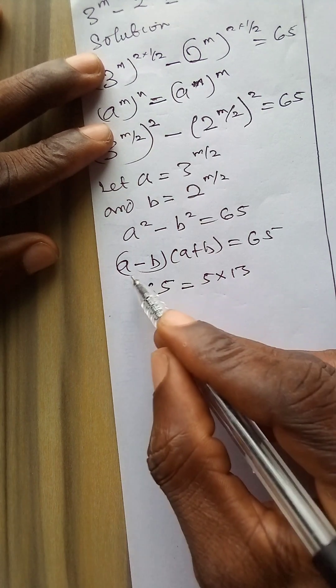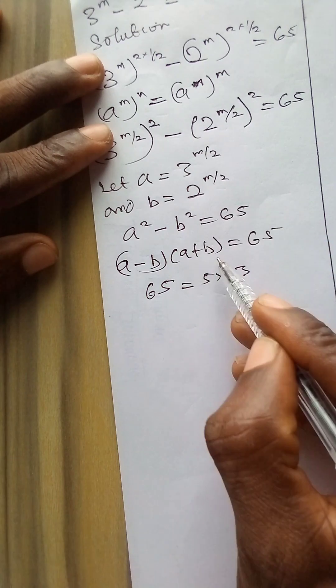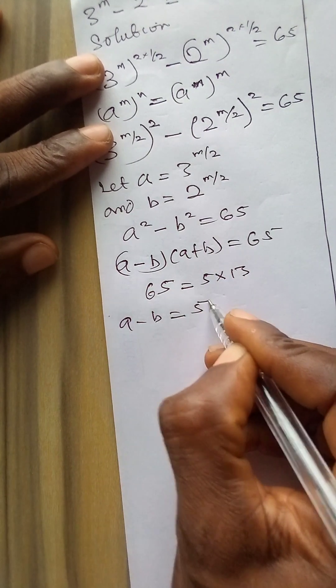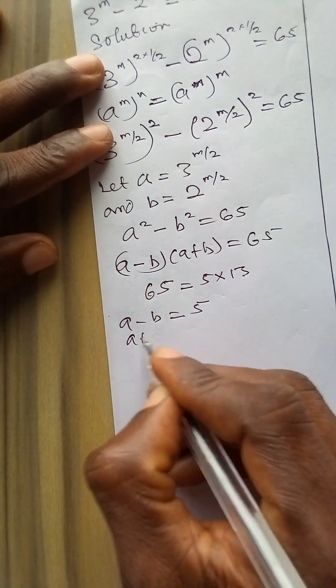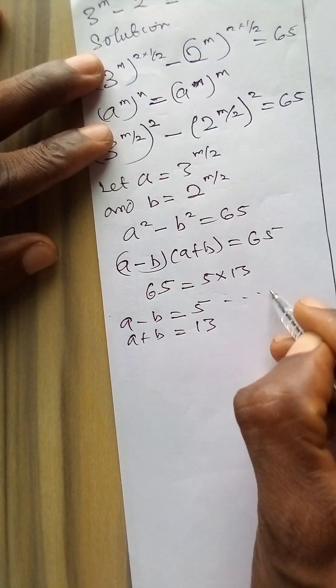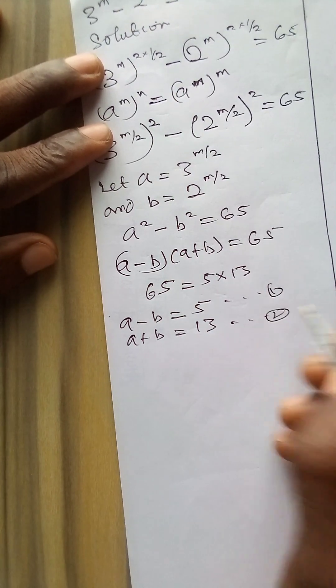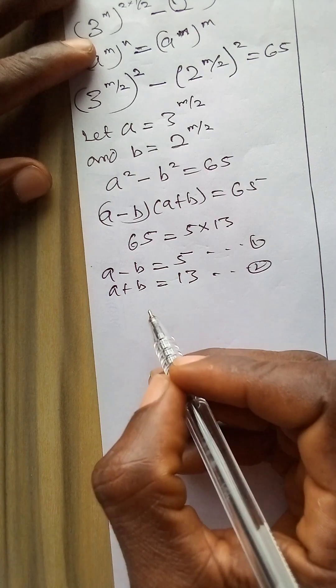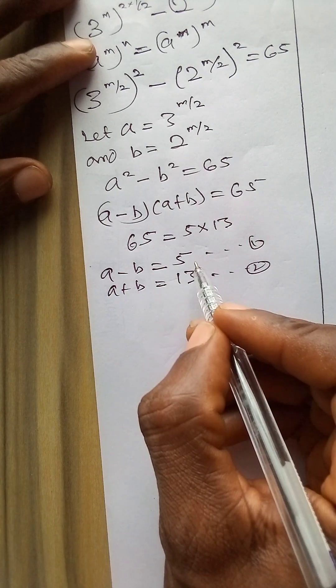Let's remember that a minus b is less than a plus b. So a minus b will be equated to 5 and a plus b will be equated to 13. This is my equation 1 and this is my equation 2. I will now have to solve this simultaneous equation.